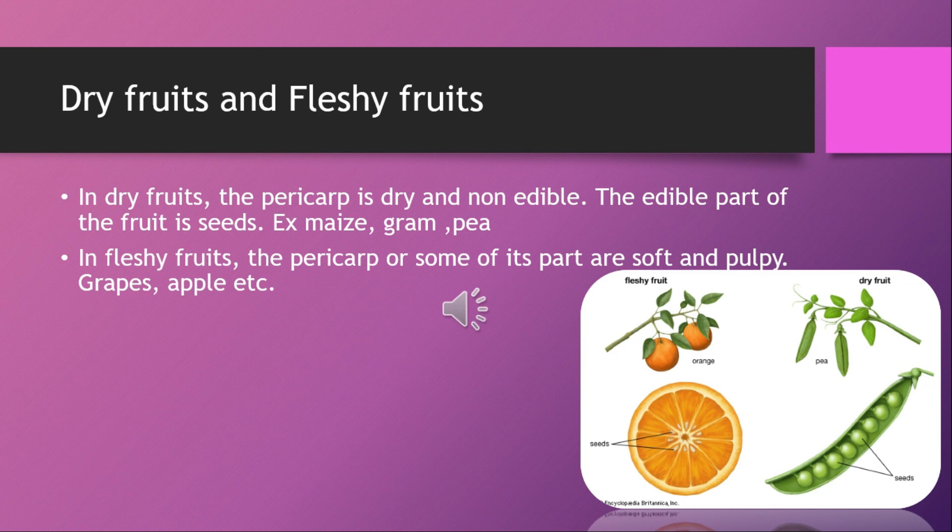In fleshy fruits, the pericarp or some of its parts are soft and pulpy. Examples include grapes, apple, and others.